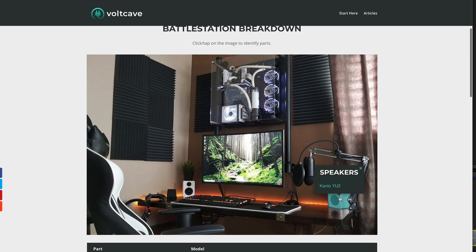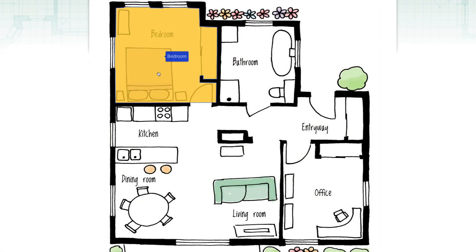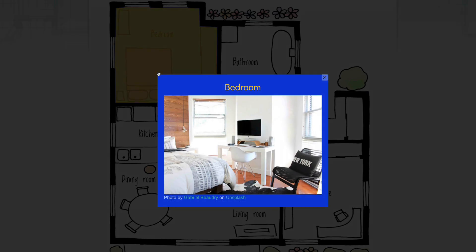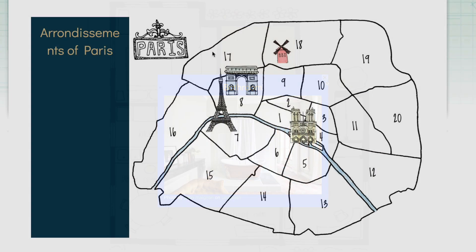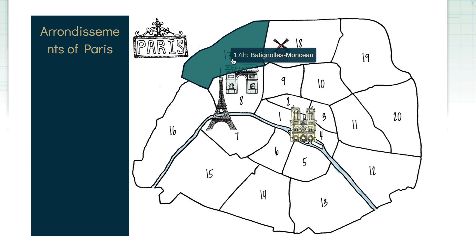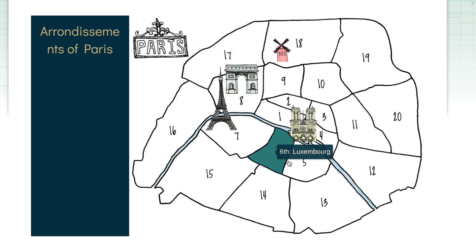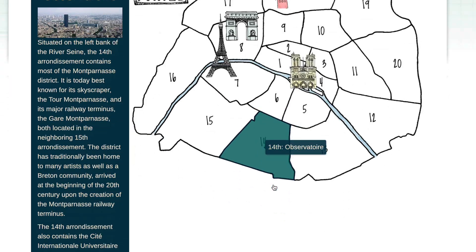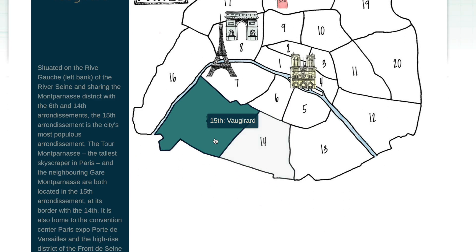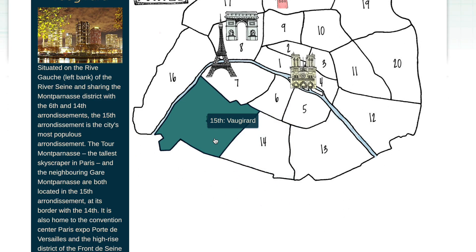So you might want to use it for a floor plan on your website, allowing people to click on the different rooms and get more information and see more pictures. Or maybe you'd like to add an interactive map to your WordPress website, so people can click on different areas of the map and look at pictures, get more information, or go off to another page on your website.